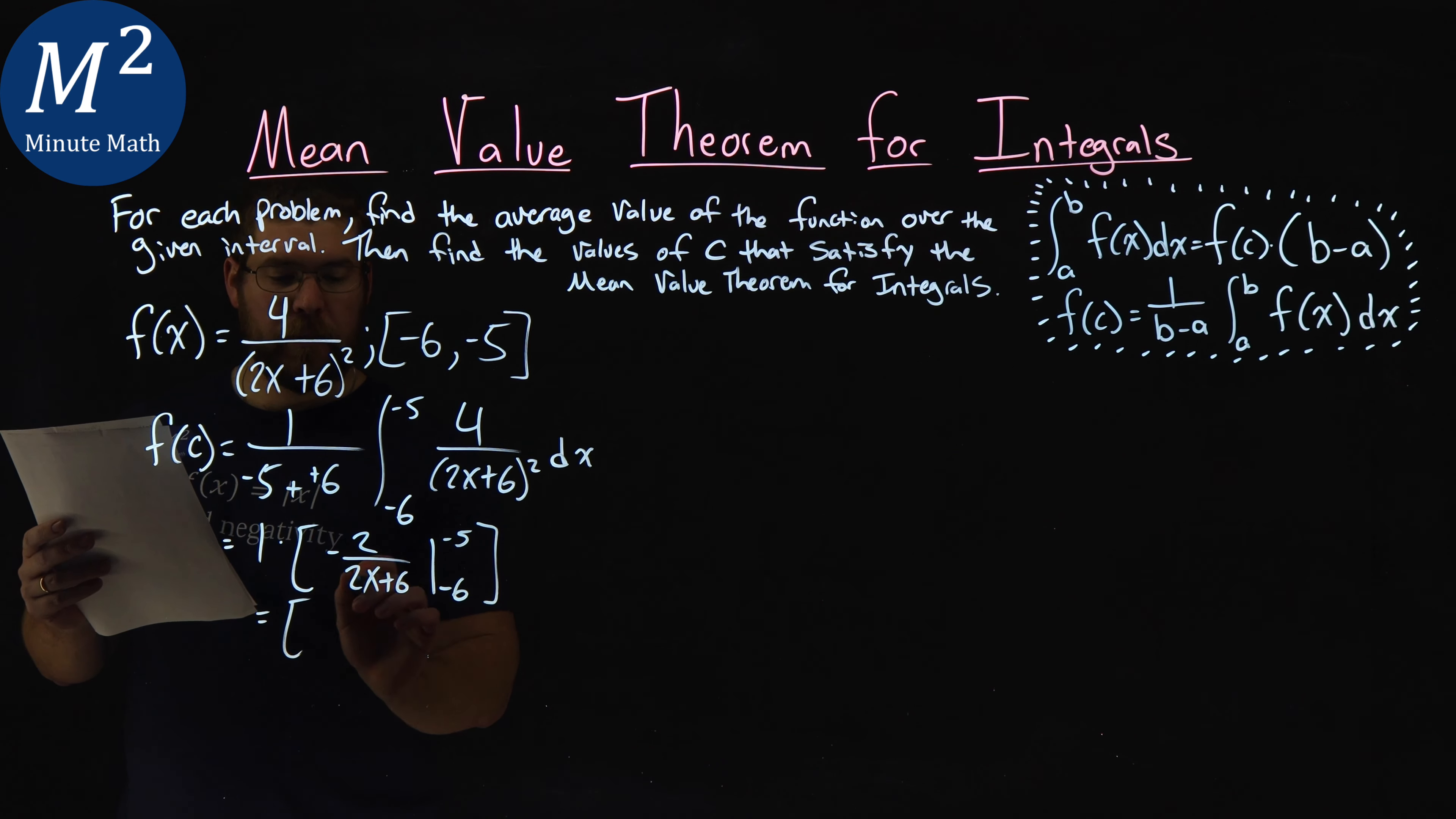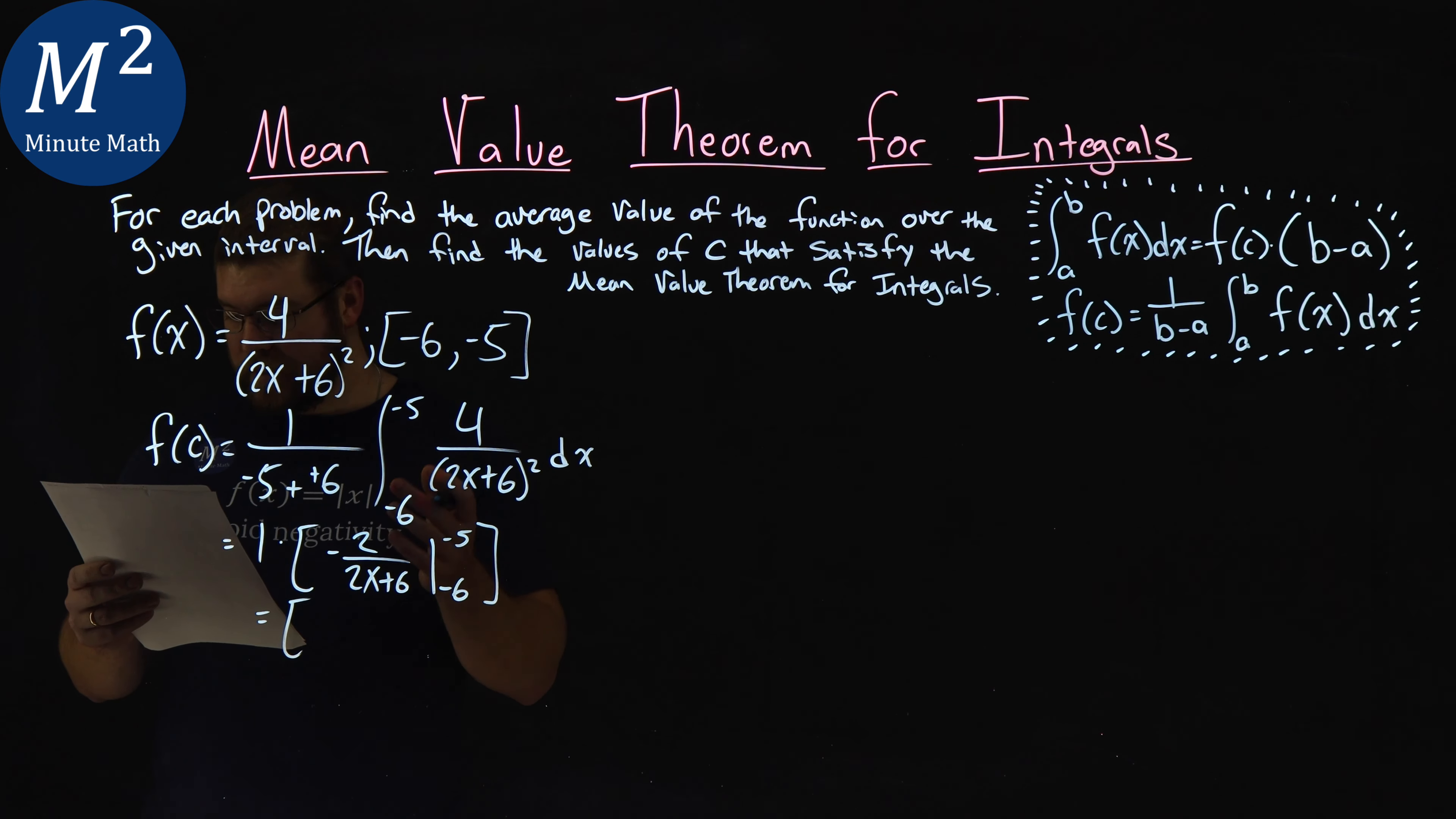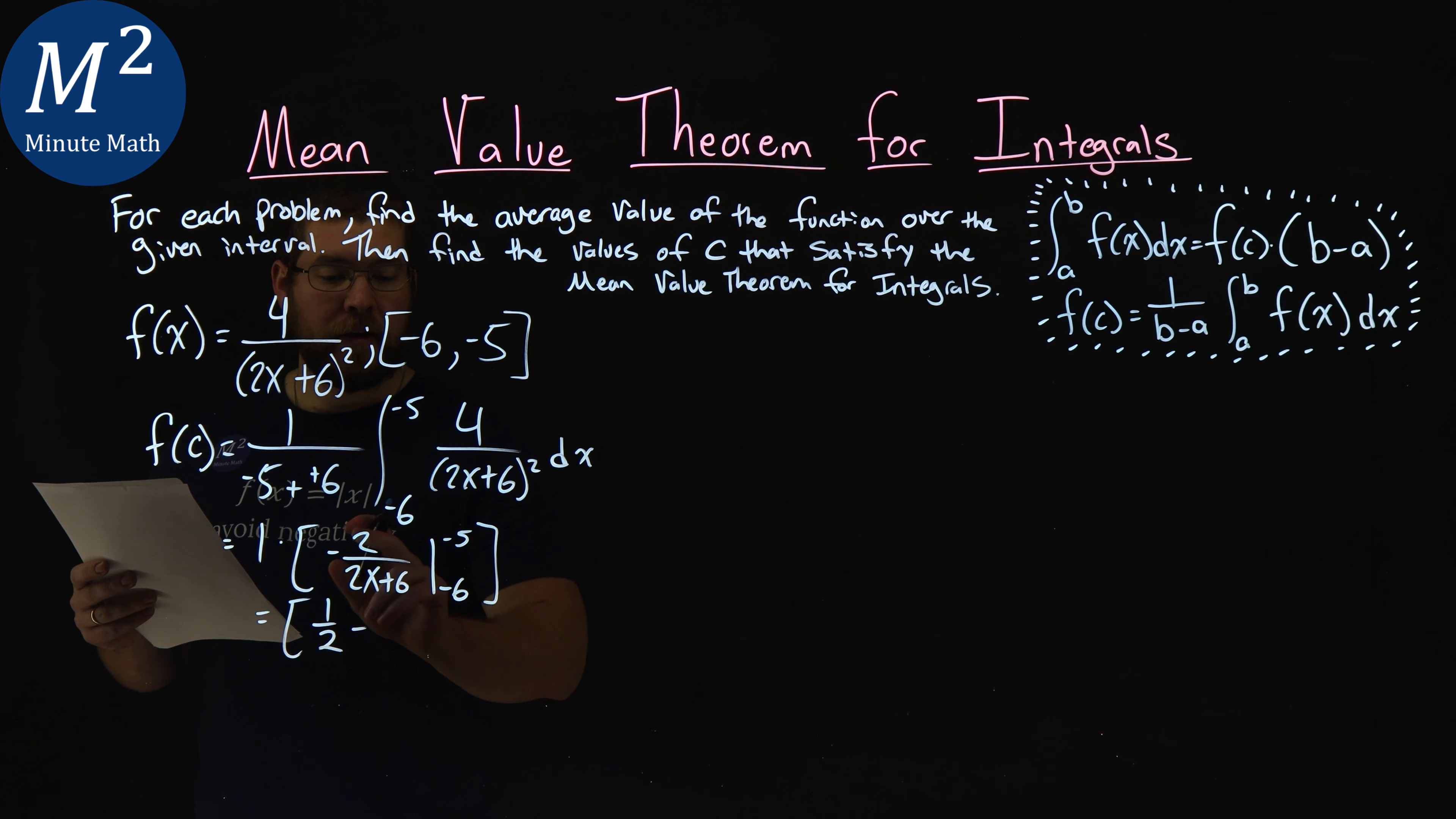Simplifying that out, we first plug in negative 5 in for x. When I do that and simplify, I got a 1 half. Plug in negative 6 in for x here in my function, and I got a 1 third, and we're subtracting them.